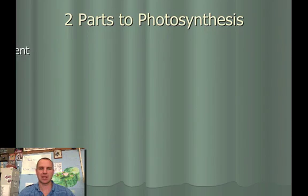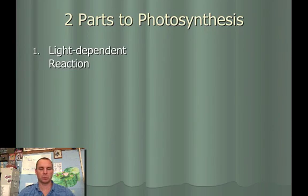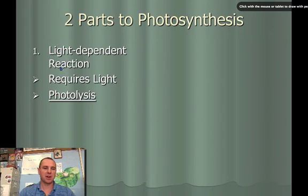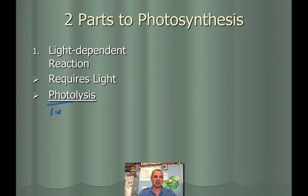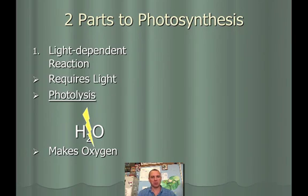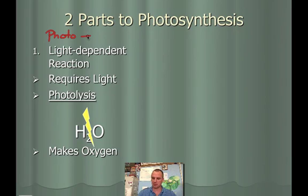There are two parts of photosynthesis. First is the light-dependent reaction, which is exactly what it says — it depends on light and requires light. During the light-dependent reaction, we have what's called photolysis. Photo means light, and lysis means split, so photolysis uses light to split something — specifically, it splits water. When you split water into hydrogen and oxygen, it releases oxygen. So the light-dependent reaction makes oxygen. I like to think of this as the photo part of photosynthesis.